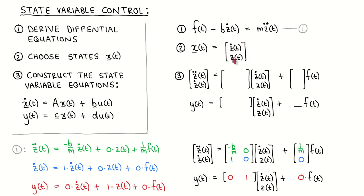The state vector is therefore given by this vector. If you are wondering how to choose the states, this is not always straightforward. The states should represent the dynamic state of the system at any point — informally, they should capture everything of interest that is currently happening in the system. Note that the choice of state vector is not unique; there are in general infinitely many valid choices. A useful rule of thumb is that the number of states should equal the order of the system. In our example, we have a second-order system, so we choose two states. It is also usually a good idea to choose states that are physically meaningful.